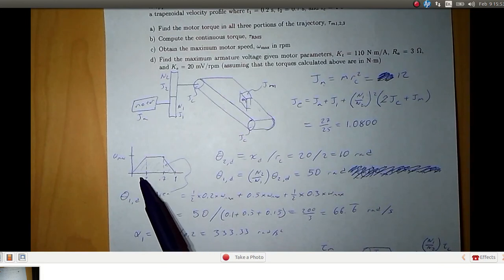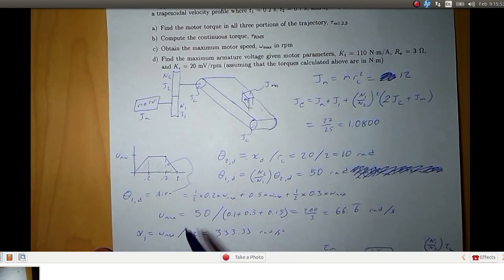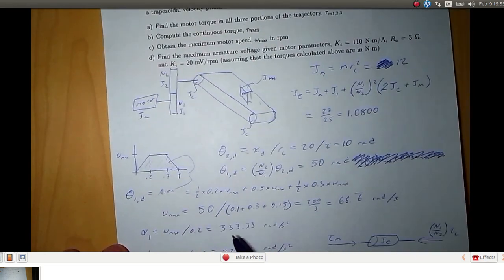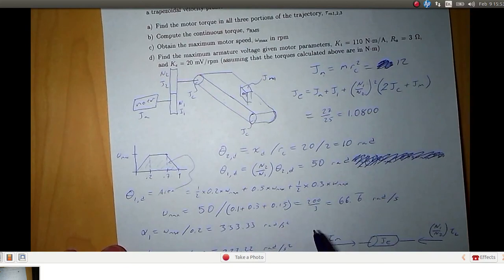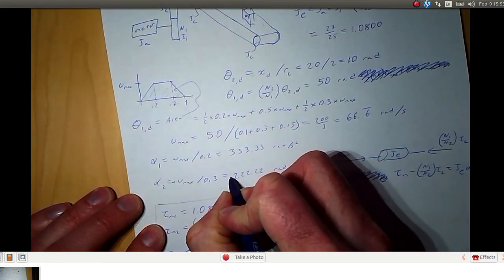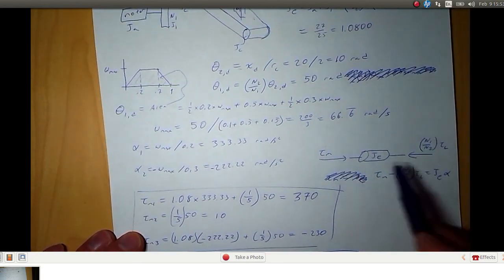Now we have two different rates of acceleration. Alpha 1 is omega max divided by 0.2, so the change in velocity divided by change in time is 333.3. And alpha 2 is the deceleration here and that's 222.2. I guess we should specify this as negative because that will come into play whenever we deal with the torques.